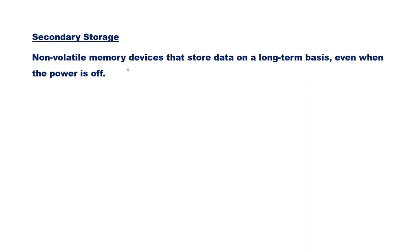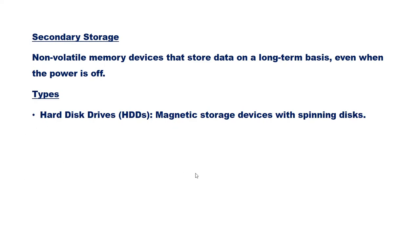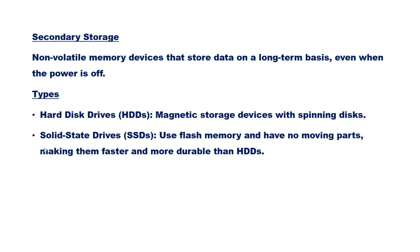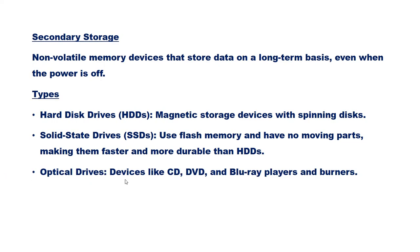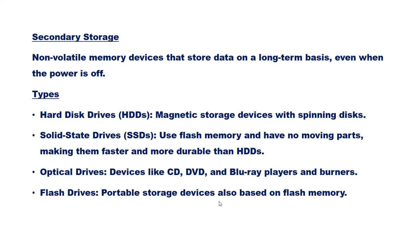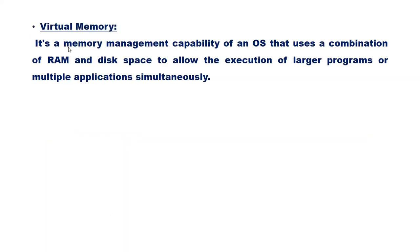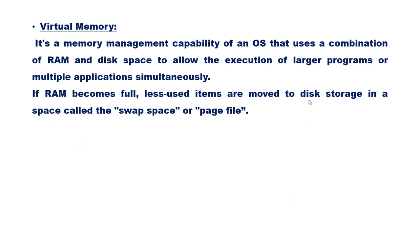Secondary storage consists of non-volatile devices that store data long-term even when power is off. Types include hard disk drives (magnetic storage with spinning disks), solid-state drives (using flash memory with no moving parts, making them faster and more durable), optical drives (CD, DVD, and Blu-ray players and burners), and flash drives (portable storage devices also based on flash memory). Virtual memory is a memory management capability of the OS that uses a combination of RAM and disk space to allow execution of larger programs; when RAM becomes full, less-used items are moved to disk storage in a space called swap space or page file.